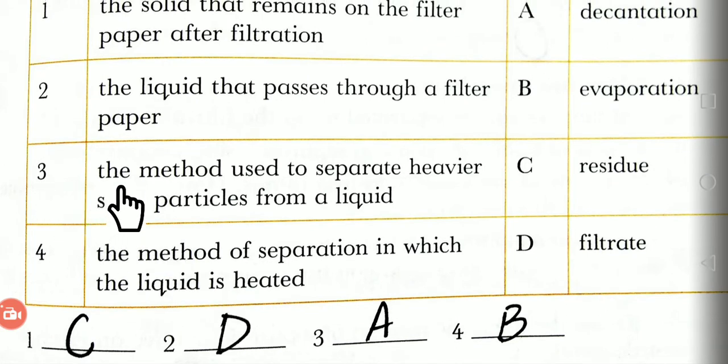Third statement is: the method used to separate heavier solid particles from the liquid. Ki wo kaun sa tarika hai, jo bhari zarrat ko liquid se separate karne ke liye istemaal kiya jata hai. Decantation or evaporation? So A is the right option. In the third one you will write A, capital A.